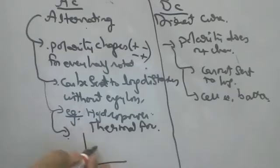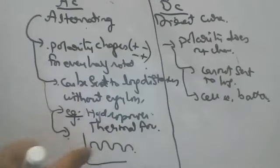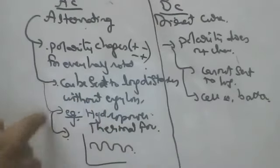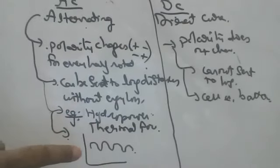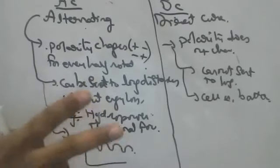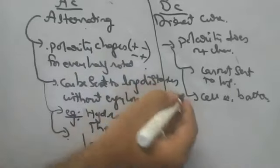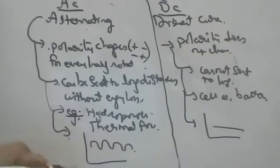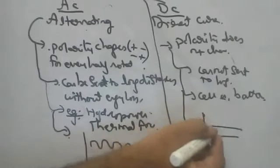If they ask about the AC graph, the alternating current graph will look like a wave because polarity is changing. After every one rotation of the armature, polarity changes two times — plus becomes minus, minus becomes plus. For every one rotation, polarity changes two times. In DC, the graph remains straight because there is no polarity change. In a board exam, if they give you a graph and ask you to identify the type of current: a wave graph is AC, a straight line graph is DC.